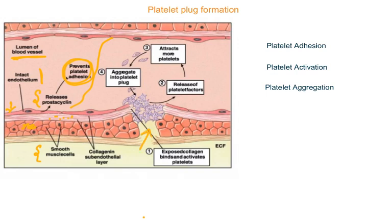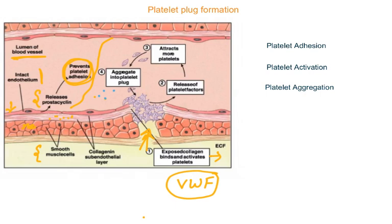Whenever there is an injury or rupture to this blood vessel, the process changes. The injured blood vessel exposes collagen and another factor known as von Willebrand factor. Whenever this basement membrane of the endothelial cell is injured, it exposes collagen and von Willebrand factor to blood circulation. Platelets normally roaming in the bloodstream come and attach to this collagen as well as von Willebrand factor.